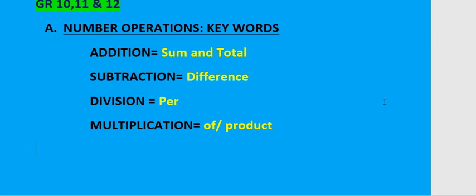For division, the word 'per' will tell you to divide. So if you've got 200 per liter, that means you take 200 and divide it by a liter. If it was 200 per two liters, then you take 200 and divide it by two liters. For multiplication, the word 'of' is used.